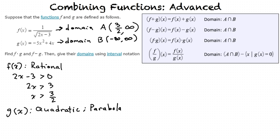Remember the intersection of these two domains is all elements, or numbers that are in both a and in b. When we combine these two domains, we see that 3 halves to infinity is common in both functions. Looking at our box, we see that when we subtract f and g, and when we multiply f and g, the domains are the same, so we have our domain for both answers.